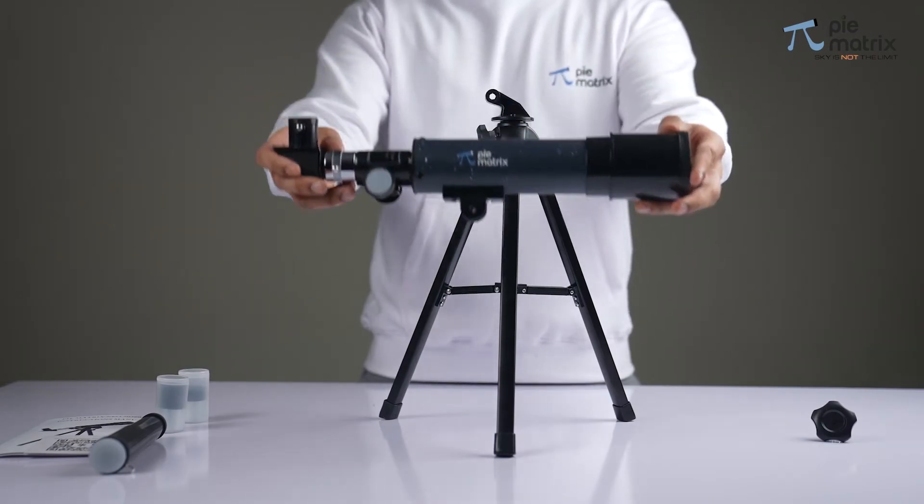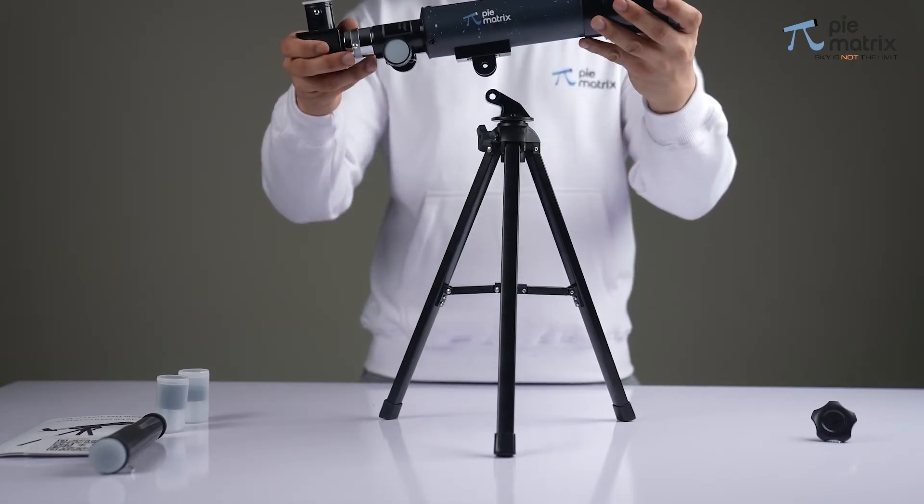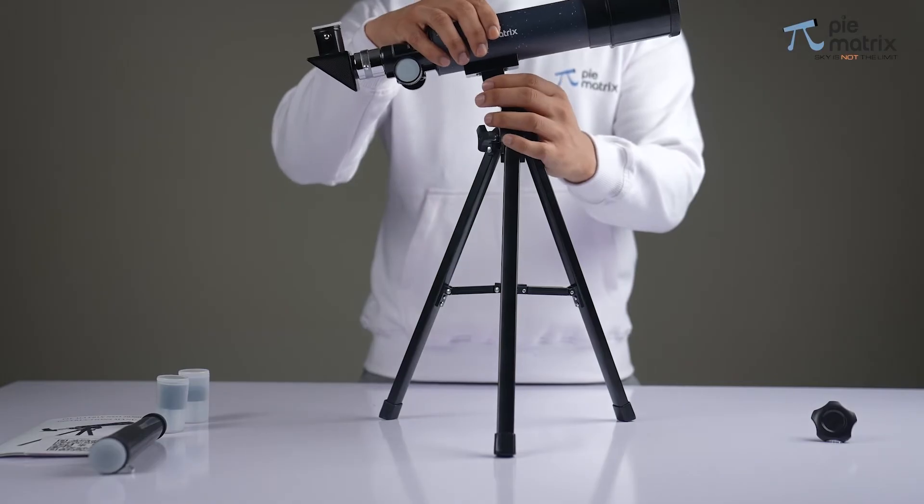The optical tube assembly has a dovetail plate underneath which needs to be attached to the tripod bracket.